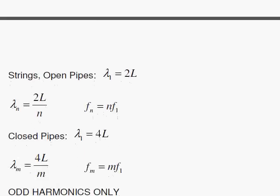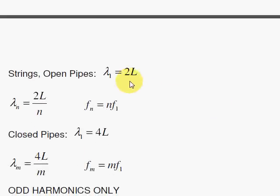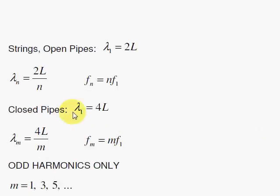For a closed pipe, you have the same idea, but two differences. One, you replace the 2 with the 4 for the fundamental, and then you kill the even harmonics. You only have odd harmonics for the closed pipe. So here, I've emphasized that by choosing N instead of N, and I let N represent a number, 1, 2, 3, 4, 5, 6, 7, etc. In a special case, it's the odd numbers only, 1, 3, 5, and that's how I remember this more easily.